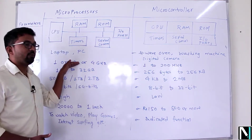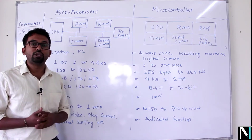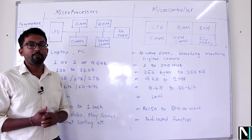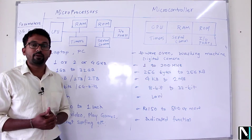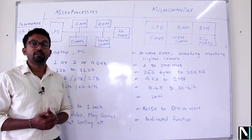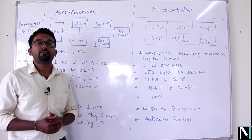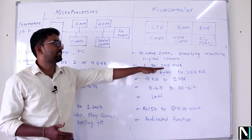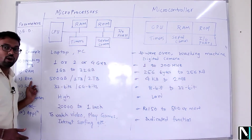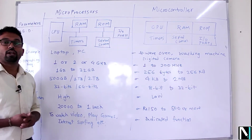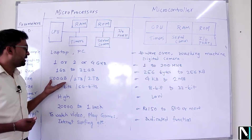In the case of a microcontroller, RAM varies from 256 bytes to 256 kilobytes. You can see the difference in RAM — and RAM determines processing capability. Obviously, the device with the maximum RAM size will have maximum processing capability, so the microprocessor will have more processing power compared to the microcontroller.